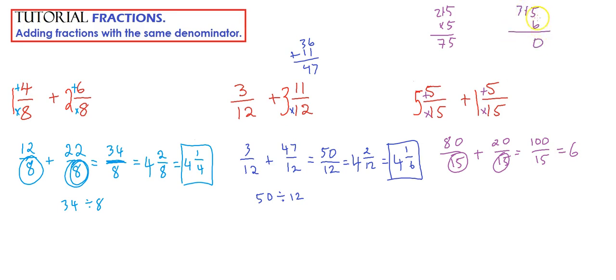6 times 1 is 6, plus 3 is 90. So we know that we're going to have 10 left over, so 10 is the remainder, so 10 fifteenths.